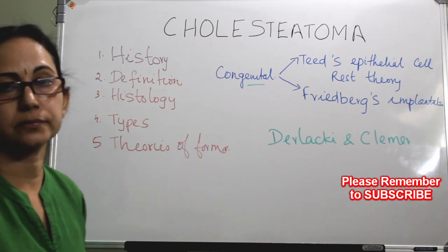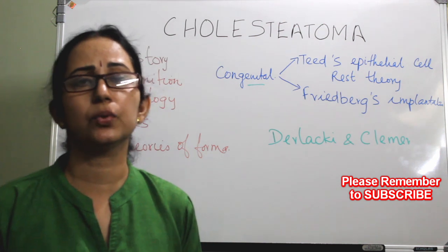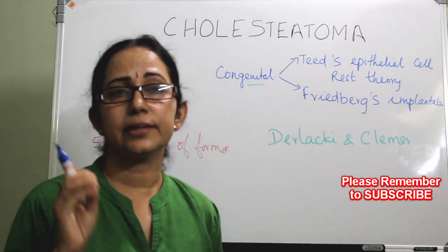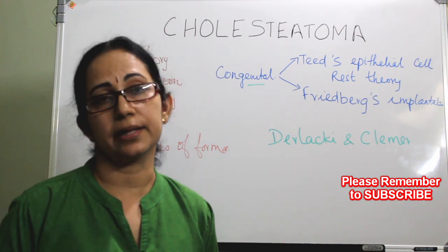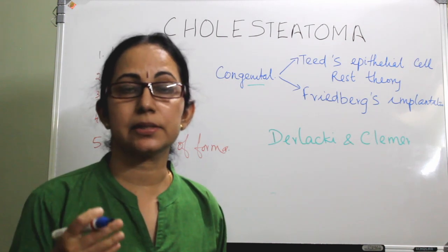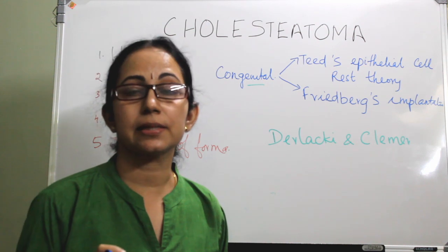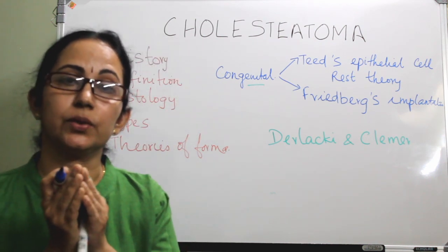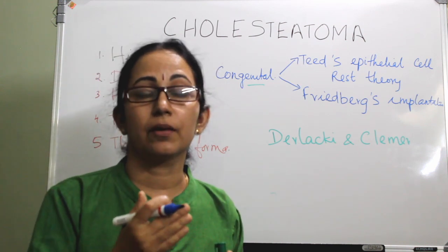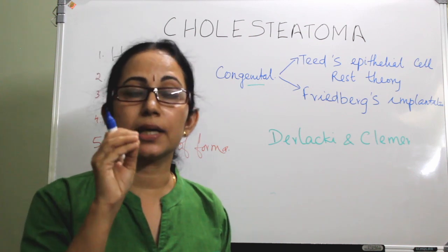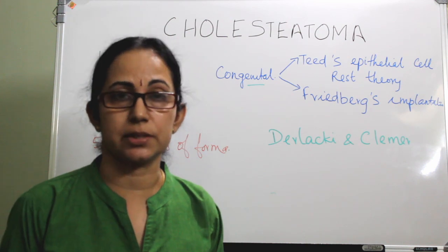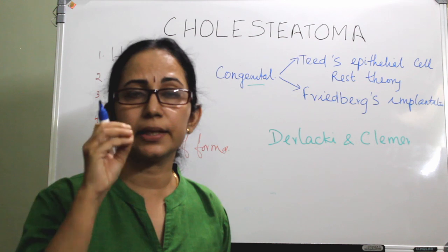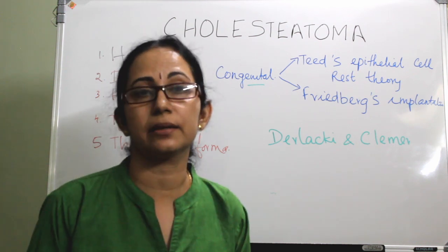For congenital cholesteatoma, there are many theories, but the most accepted is Teed's epithelial cell rest theory, and also Friedberg's implantation theory. In Teed's theory, during development a derivative of the first branchial groove remains as an epidermoid plate at the junction of the middle ear cleft and the eustachian tube. This normally involutes by 33 weeks of gestation; if it fails to resolve, it remains implanted inside the middle ear cleft and becomes congenital cholesteatoma.